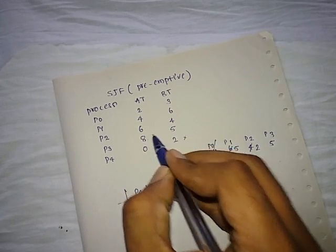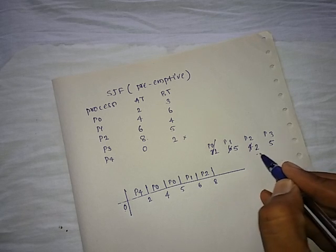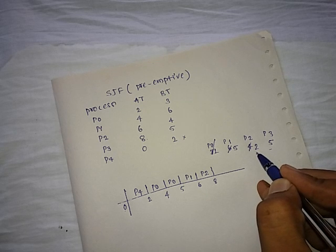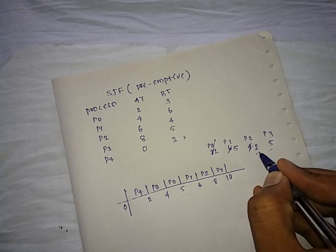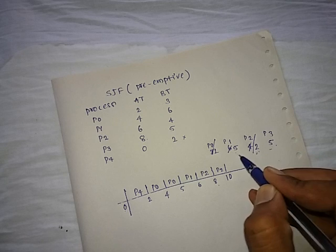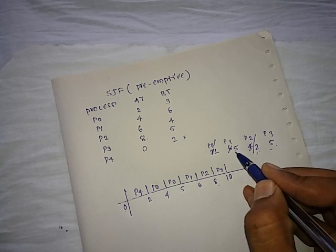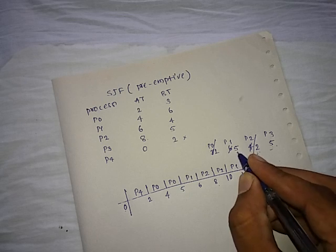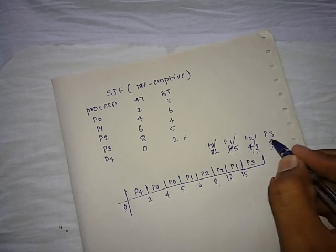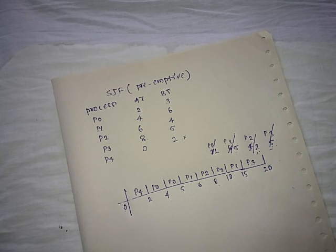The highest arrival time is eight and we have completed processing from zero to eight, meaning all processes have now arrived. We have three processes concurrently in the system and can simply apply the Shortest Job First algorithm on their burst times. The smallest burst time is P2 with two, so we execute P2 to completion: eight plus two equals ten. Now P1 and P3 remain with equal burst times of five, so we apply First Come First Serve — P1 scheduled from ten to fifteen, then P3 from fifteen to twenty. The Gantt chart is complete.